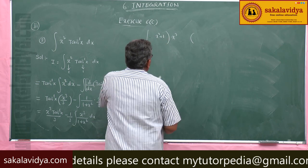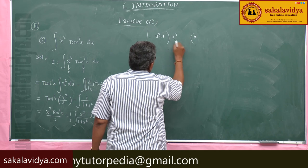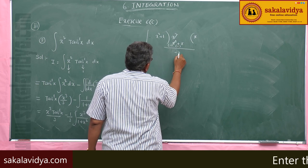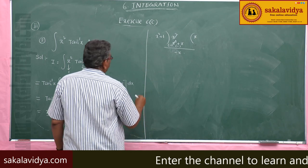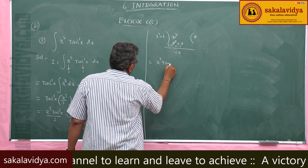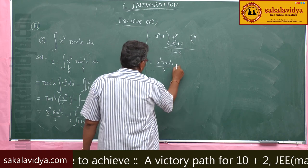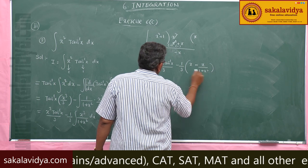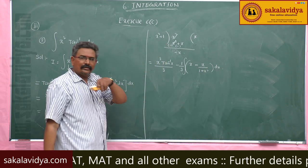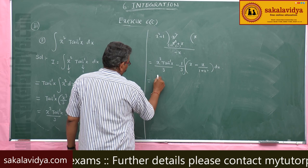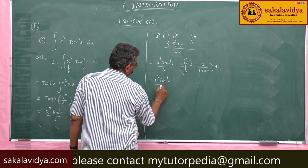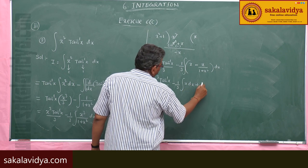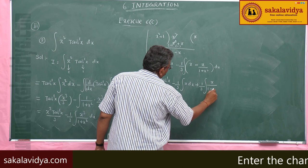Performing polynomial division: x cubed by x squared gives x. So x cubed equals x times (x squared plus 1) minus x. Subtracting, we get a remainder of minus x. Now this can be written as x cubed tan inverse x by 3, minus 1 by 3 of the integral of x minus x by 1 plus x squared dx. So this is x cubed tan inverse x by 3, minus 1 by 3 integral of x dx, plus 1 by 3 integral of x by 1 plus x squared dx.